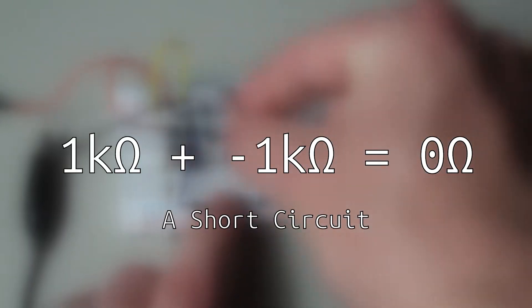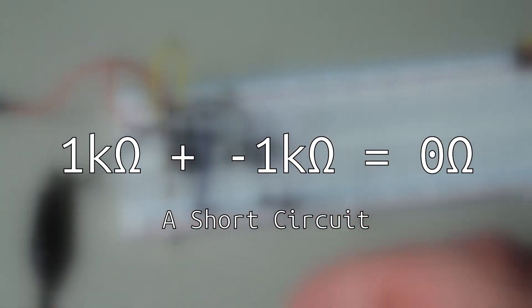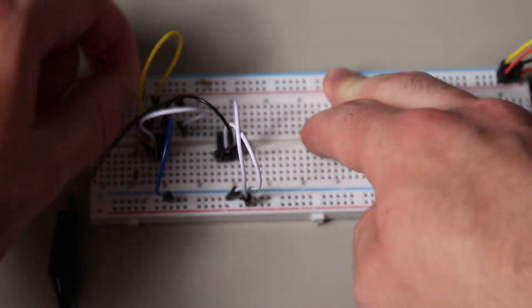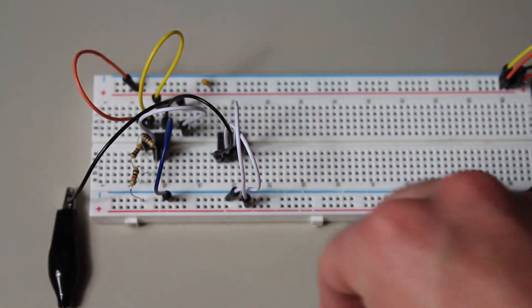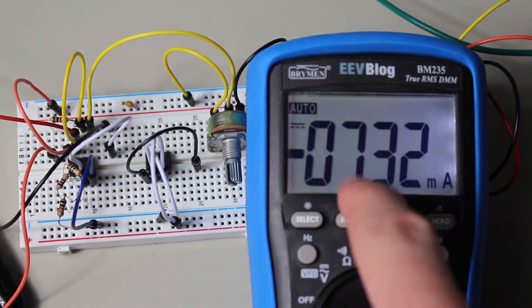Well, according to the addition, we should get zero ohms, aka a dead short. Luckily, we can also try this. I simply added another 1k in between the negative impedance converter and the power supply. And we get a current of negative 7 milliamps, which at first glance might not seem like a short circuit.